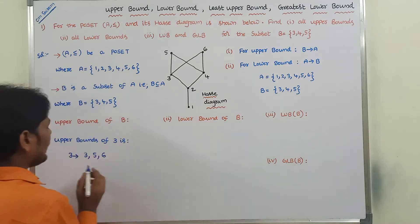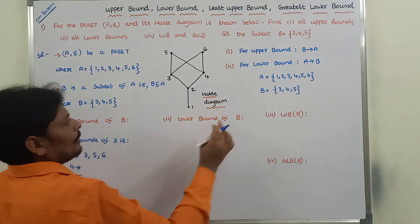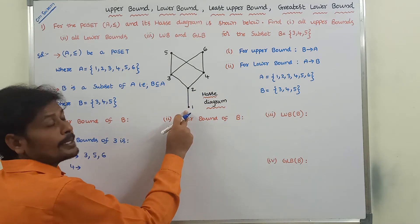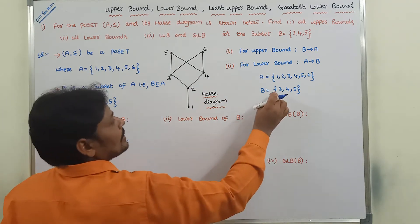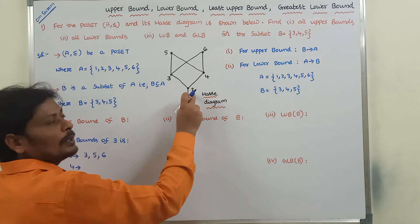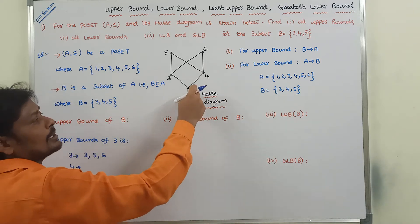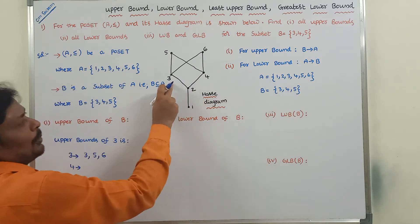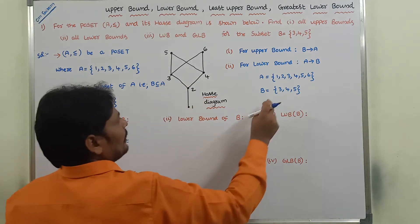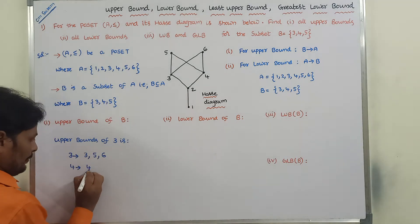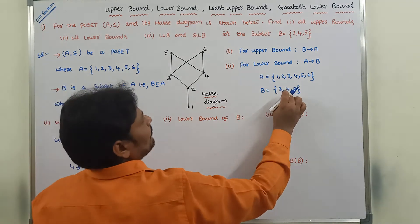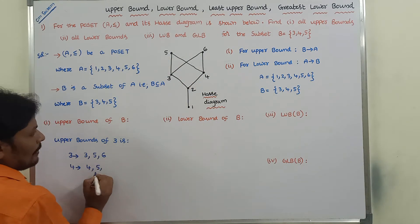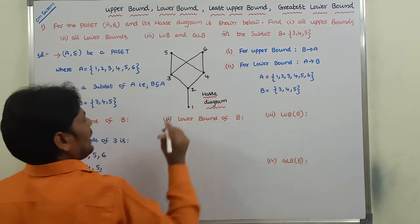Taking element 4 — 4 is not related with 1 or 2 (downward relations). 4 is not related with 3. 4 is related with 4? Yes. 4 is related with 5? Yes. 4 is related with 6? Yes. So upper bound of 4 is {4, 5, 6}.